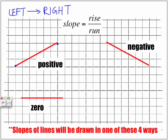If we have a straight horizontal line, our slope is equal to zero.